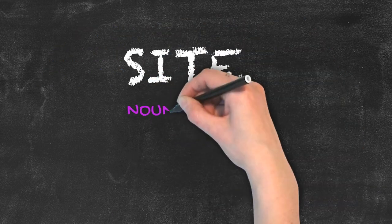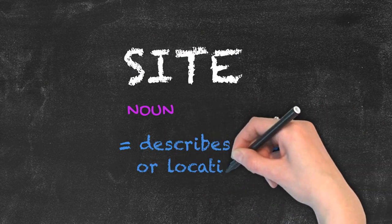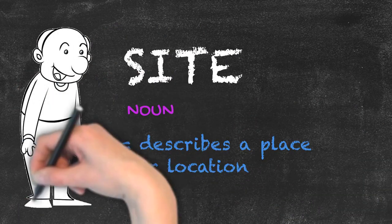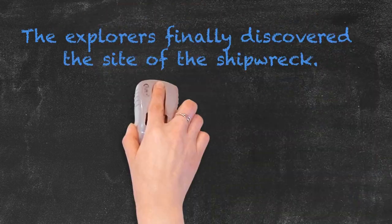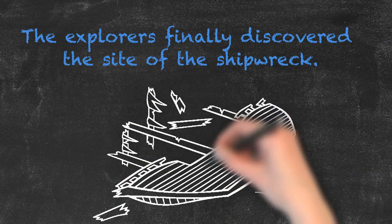Site, on the other hand, is a noun and describes a place or location. An example sentence would be, the explorers finally discovered the site of the shipwreck.